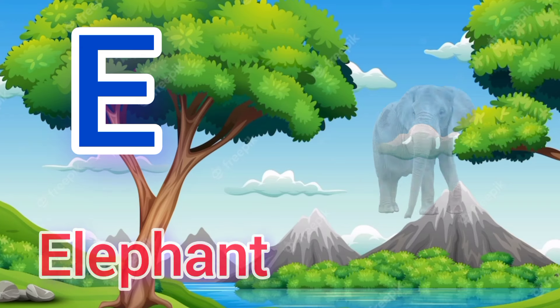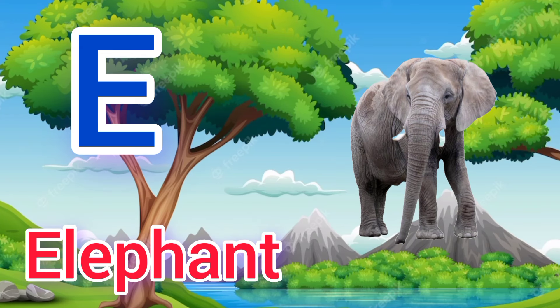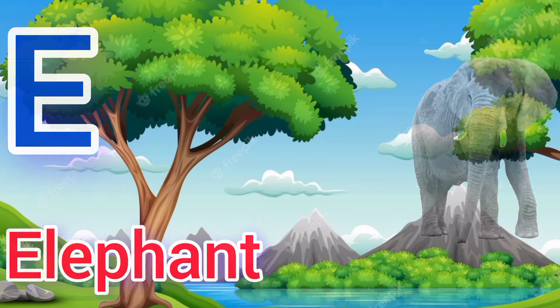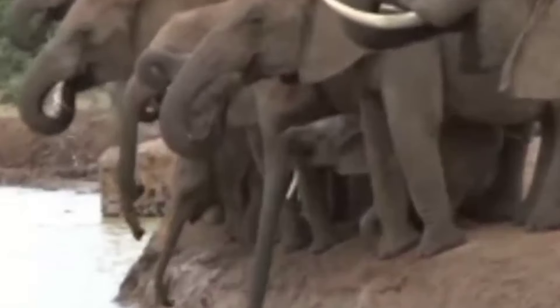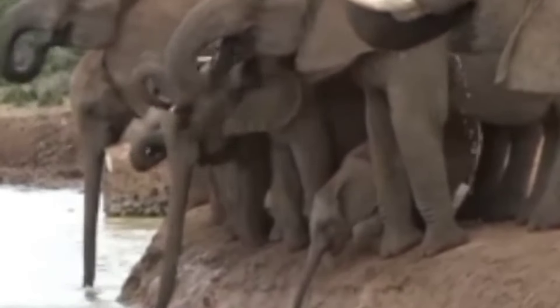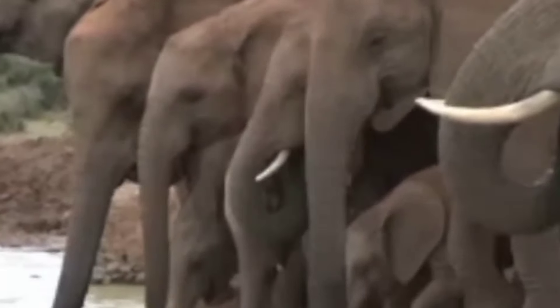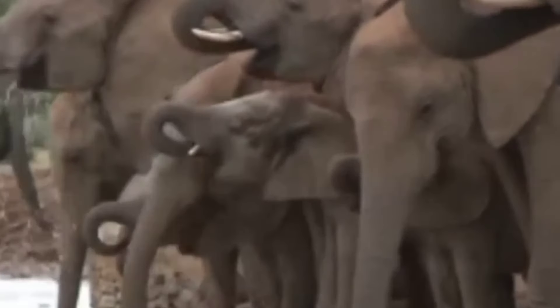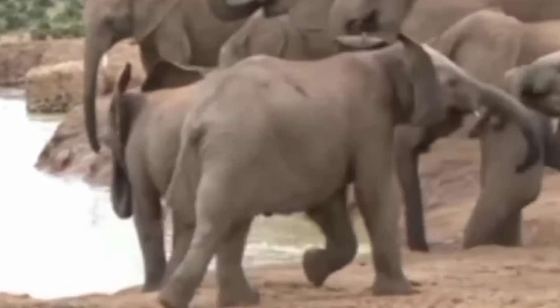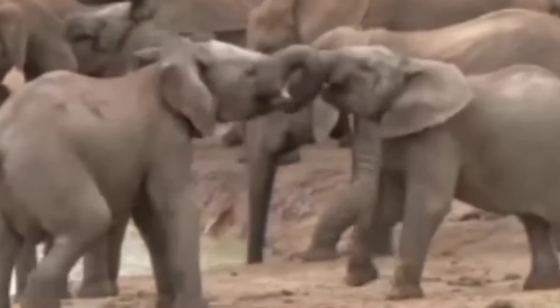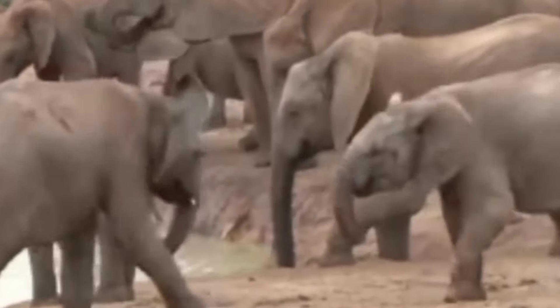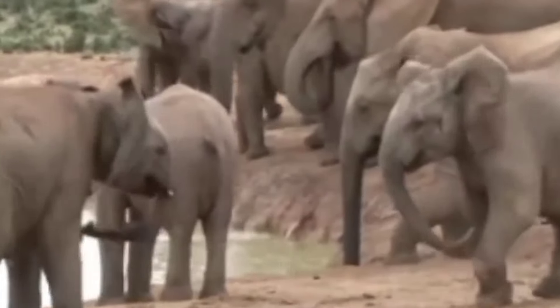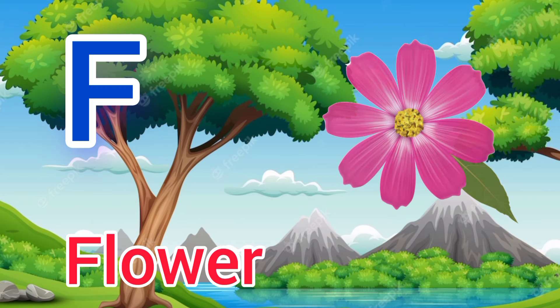E. E for elephant, elephant means hati. E for flower, flower means phool.